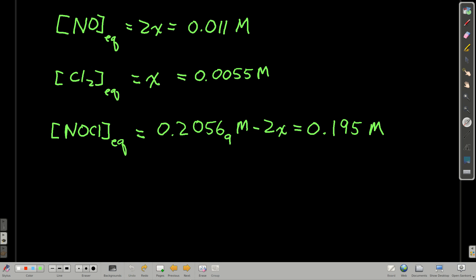All right. So now that we know x, we can find the equilibrium concentrations of all our species. So remember, nitrogen monoxide was 2x, so that's this. Chlorine is just x, so it's this, and our nitrosyl chloride is going to be 0.2057 minus 2x, which is about 0.195 molar.